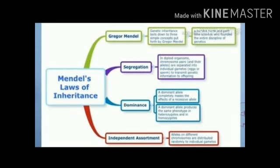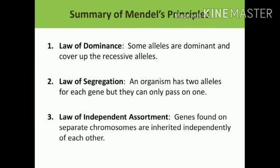Basically, these three laws depend on monohybrid and dihybrid cross. To summarize: Law of Dominance states that some alleles are dominant and cover up the recessive allele. Law of Segregation says that an organism has two alleles for each gene but can only pass on one. And Law of Independent Assortment states that genes found on separate chromosomes are inherited independently of each other, meaning every independent character will transfer from one generation to the next.